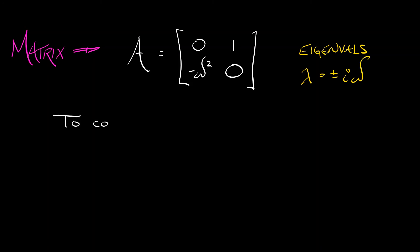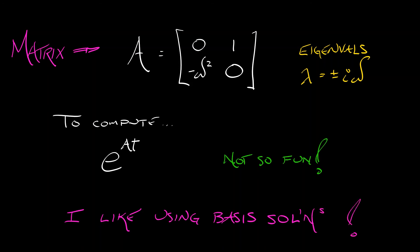Now, to compute the full solution to this system, to exponentiate this matrix, what do we have to do? We have to compute the complex eigenvectors and then pack them into the matrix and then take the inverse and multiply all that stuff out. It's not so much fun. I kind of like using basis solutions. It's computationally a little bit easier to work with.